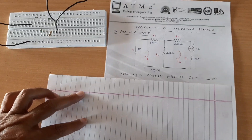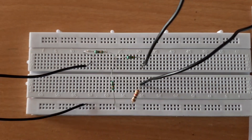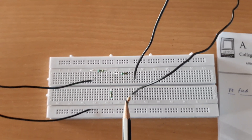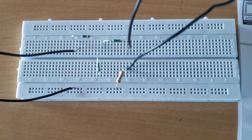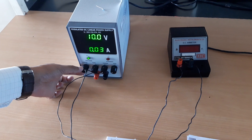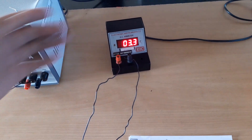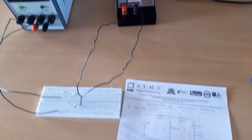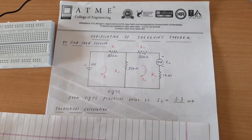Now the circuit is completed. I have connected V1 from the power supply. So this is R1, R2, R3; these two wires are from the milli ammeter and this one is RL load resistance. I will set the power supply to 10 volts — it is already set to 10 volts. Now switching on the milli ammeter, it is showing the reading: 3.3 milli amperes. So the practical value we have got is IL equal to 3.3 milli amperes.